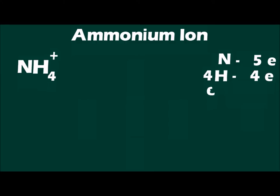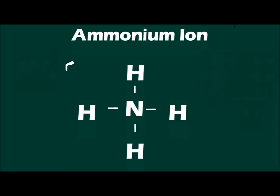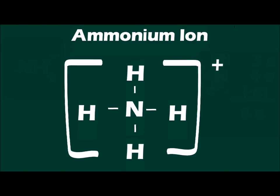The ammonium cation has eight valence electrons. When drawing the Lewis structure for ammonium, remember that hydrogen atoms are always terminal. Once you have finished distributing electrons and have completed the Lewis structure for an ion, draw square brackets around the Lewis structure, and place the overall charge as a superscript in the top right-hand corner.